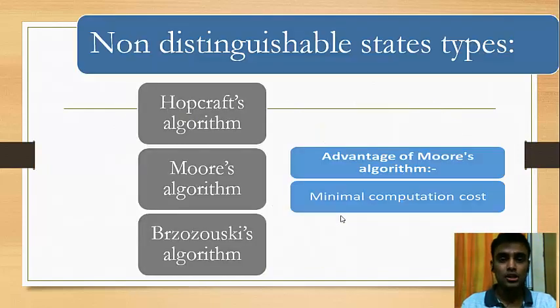Non-distinguishable states are solved using three algorithms. First is Hopcroft's algorithm, second is Moore's algorithm and the third is Brzozowski's algorithm. In Moore's algorithm, we have an advantage. It gives us minimal computation cost and therefore we will be solving the examples today using this algorithm only.